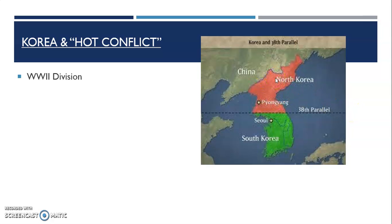North Korea had been given control through the Soviet Union, and the United States was in control of South Korea — just like Germany, split into sections so each of the allies could help them get back on their feet and start their governments. In 1949, the United States was scheduled to leave South Korea, the same year that China had fallen to communism. The United States had left a democratic government in South Korea, just as the Soviet Union had left a communist government in North Korea, but China becoming communist made North Korea feel more bold, and they soon invaded South Korea.